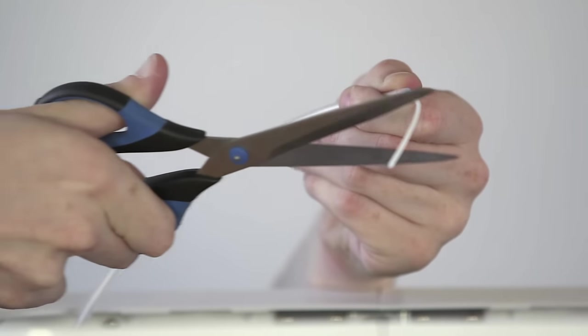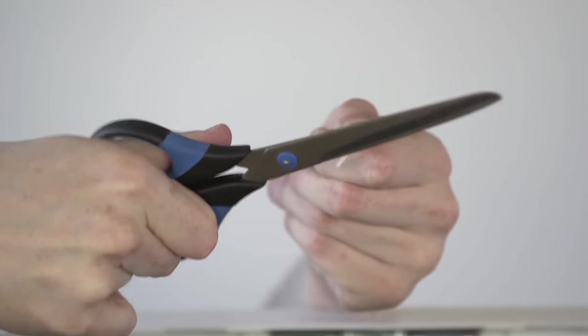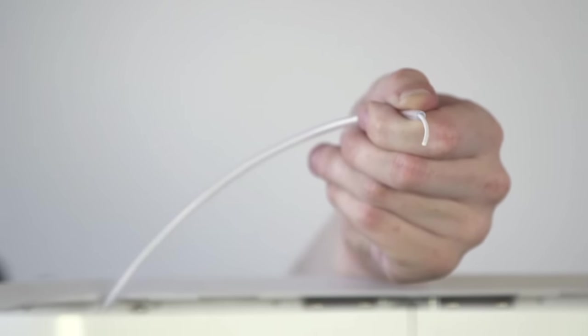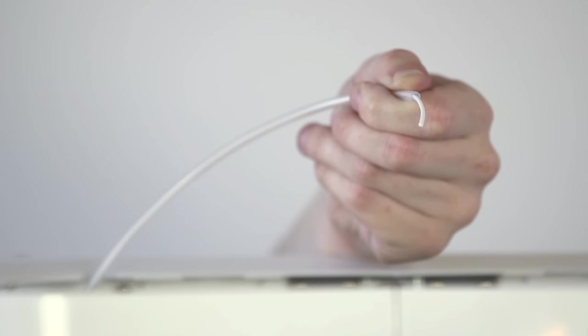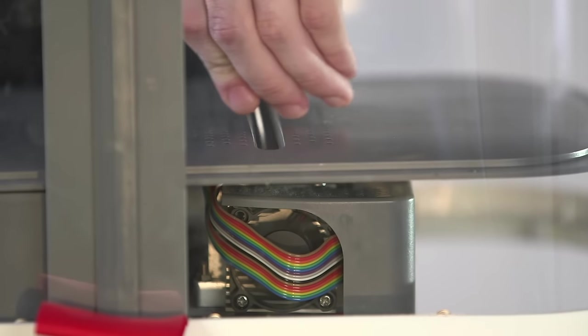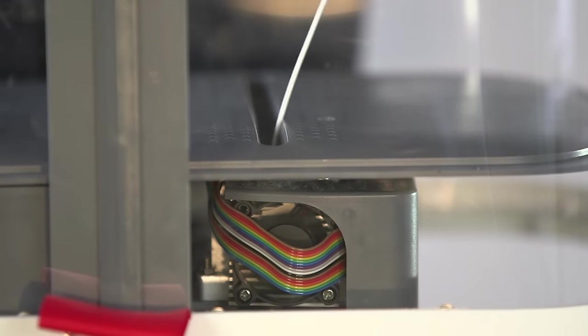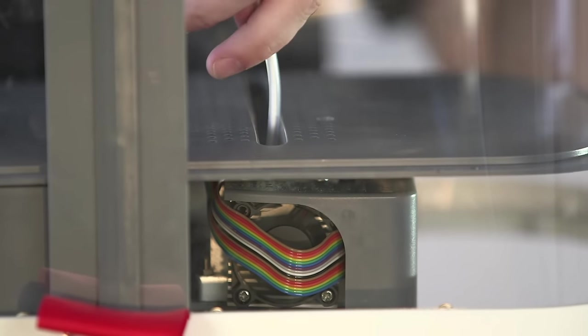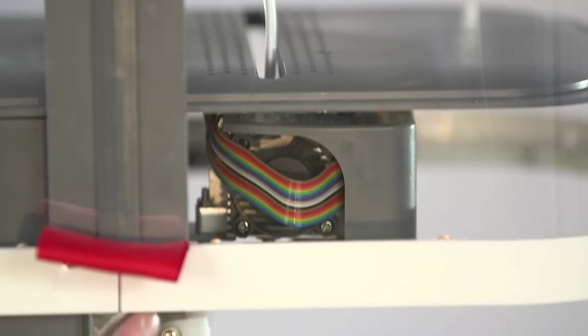Using scissors, snip the end of the filament off at an angle. This will sharpen the tip and help the drive gear engage it. Feed the filament into the hole in the top of the printhead, pushing it in until you feel resistance. Now lower the hood.